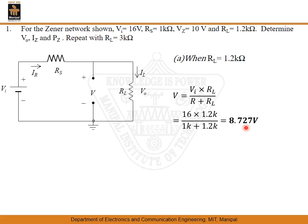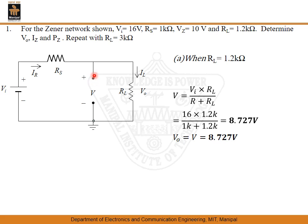We see that the voltage V is less than VZ. If V is less than VZ, the Zener diode will be in the OFF state — it will be open. Therefore, V0 is equal to V, which is 8.727 volts. Since the Zener diode is in the OFF state, there is no current flowing through it, so IZ equals 0 amperes and PZ, the product of VZ and IZ, also equals 0 watts.